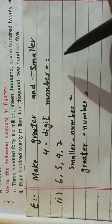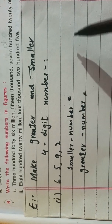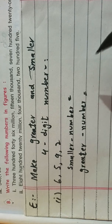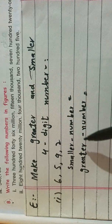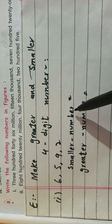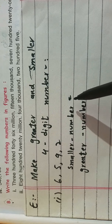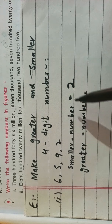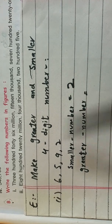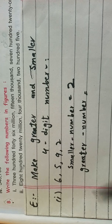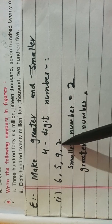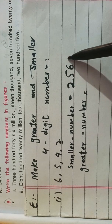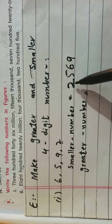You don't need to memorize ascending or descending — just remember: smaller number uses ascending order, which means starting from the smallest value. So we arrange: two is smallest, then five, then six, then nine.